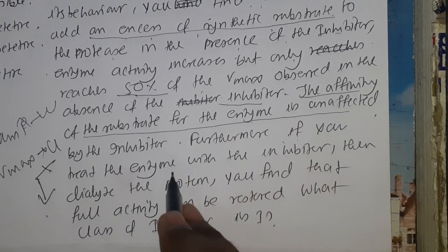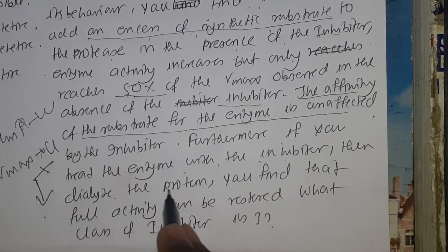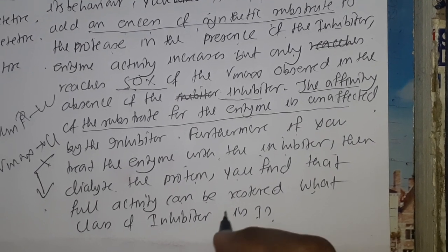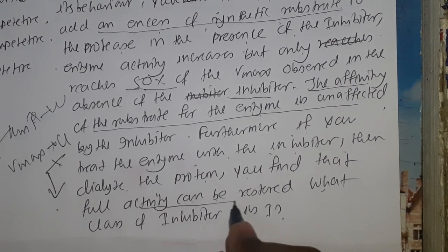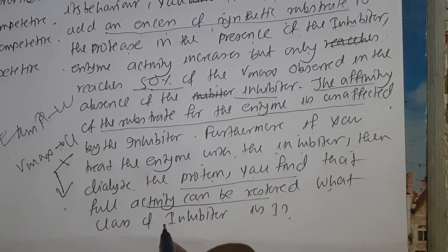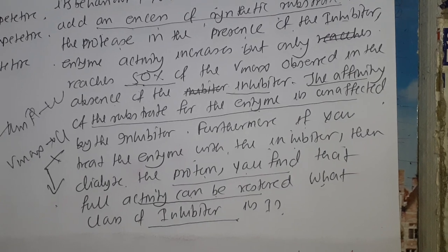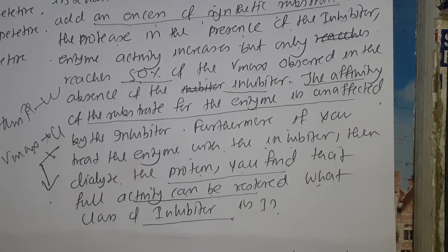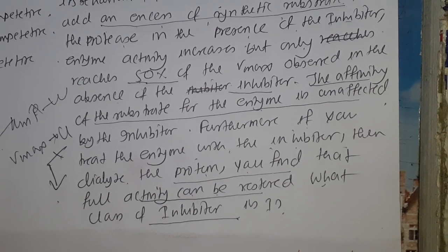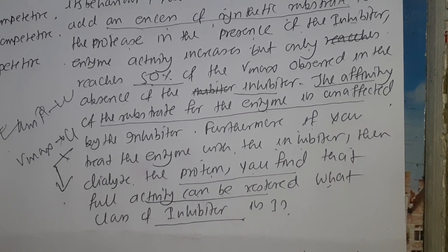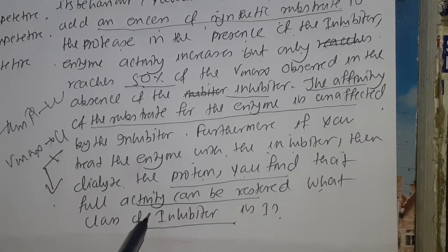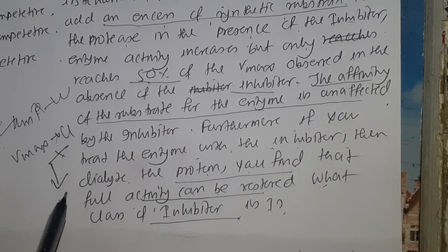If you treat the enzyme with the inhibitor, then dialyze the protein, you find that full activity can be restored. We know that in irreversible inhibition, there is a covalent bond between enzyme and inhibitor, which causes distortion of the enzyme. But since activity can be restored, it means this is a reversible inhibitor.